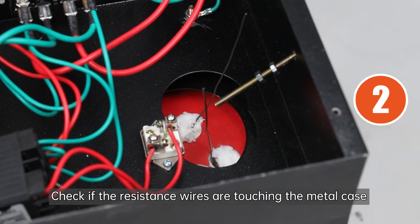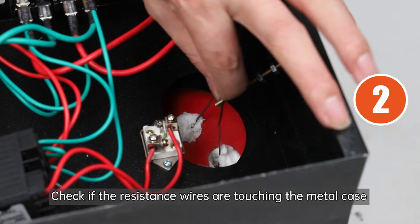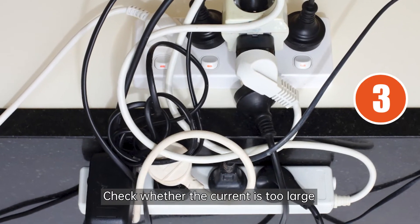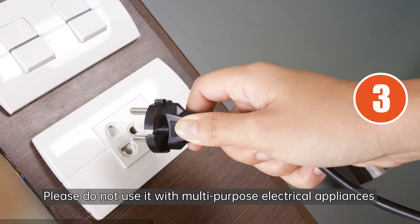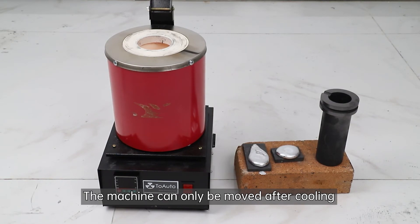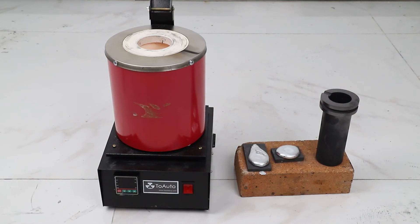Two, check if the resistance wires are touching the metal case. If so, separate them. Three, check whether the current is too large. Please do not use it with multi-purpose electrical appliances. The machine can only be moved after cooling, otherwise the heating core will be easily broken.